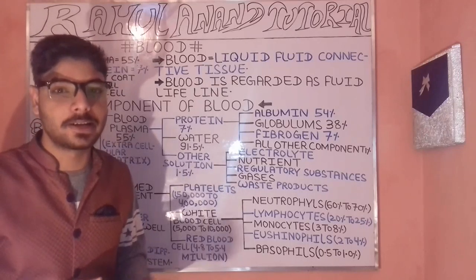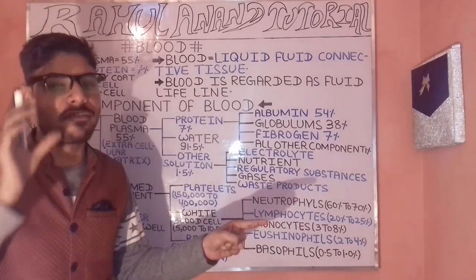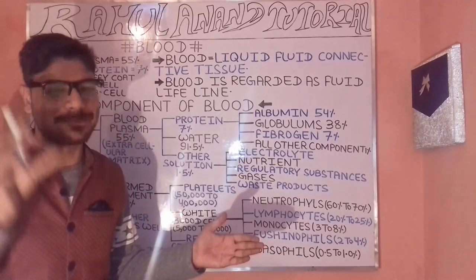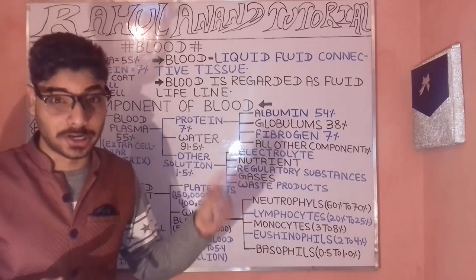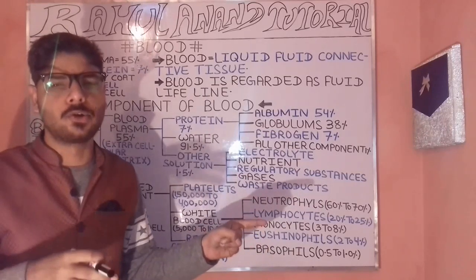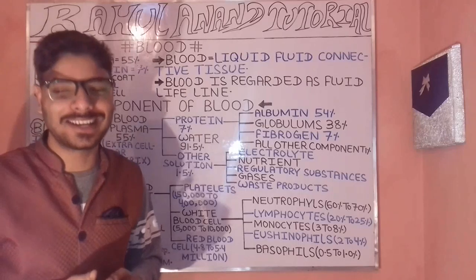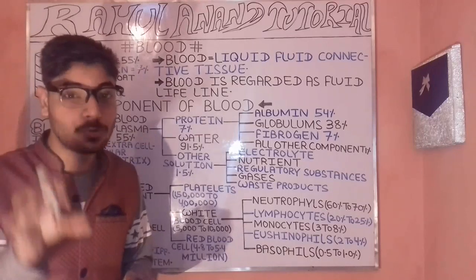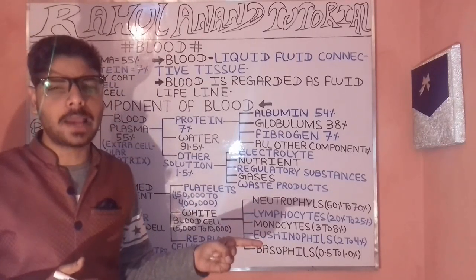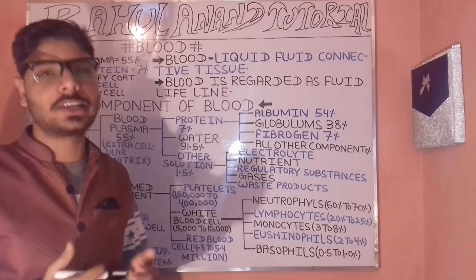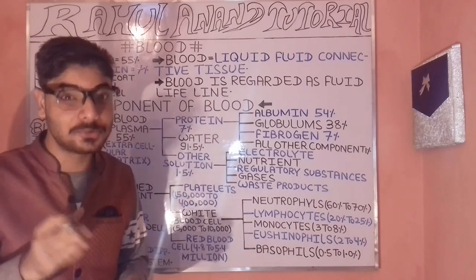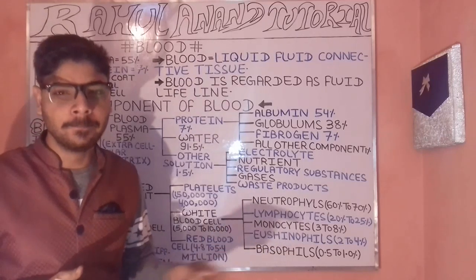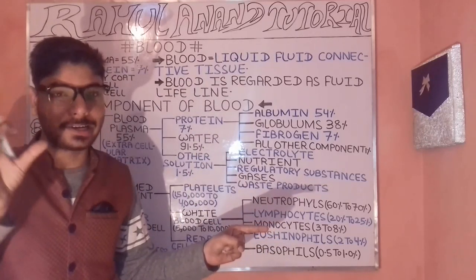Using the centrifuge we get the major components of blood. These include plasma, protein, the buffy coat, red blood cells, and white blood cells. Plasma accounts for around 55 percent and protein around 7 percent.